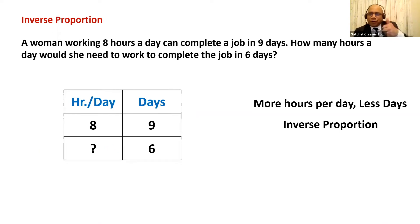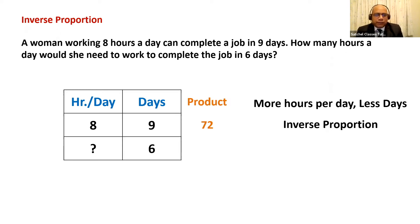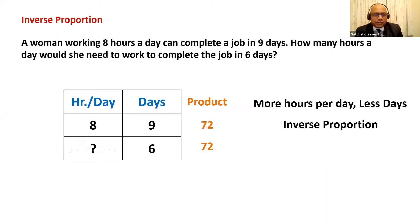Let's use the product rule instead. If two quantities are in inverse proportion, their product should be the same. In the first row, 8 times 9 is 72. The product of the second row must also be 72. Something times 6 equals 72 — 12 times 6 is 72. So she should work 12 hours a day. This makes the question on inverse proportions very easy: all you need to do is ensure the product remains the same in each case.